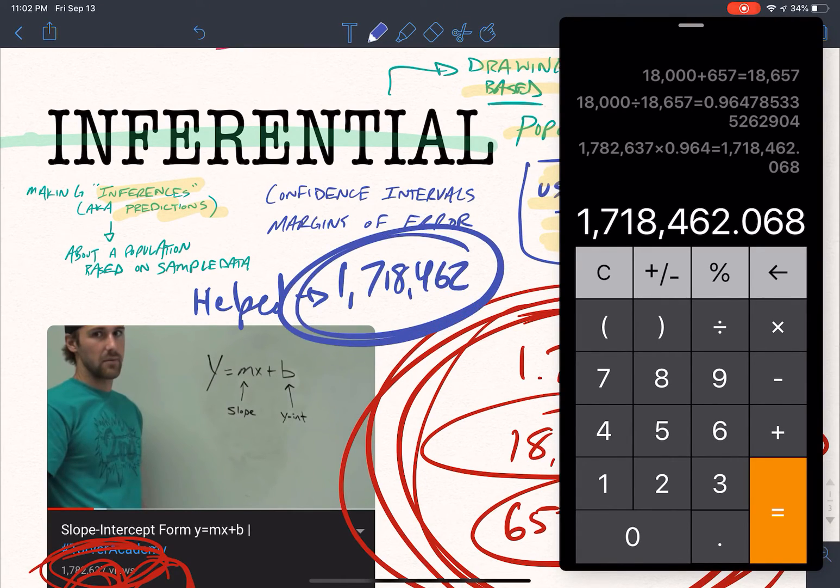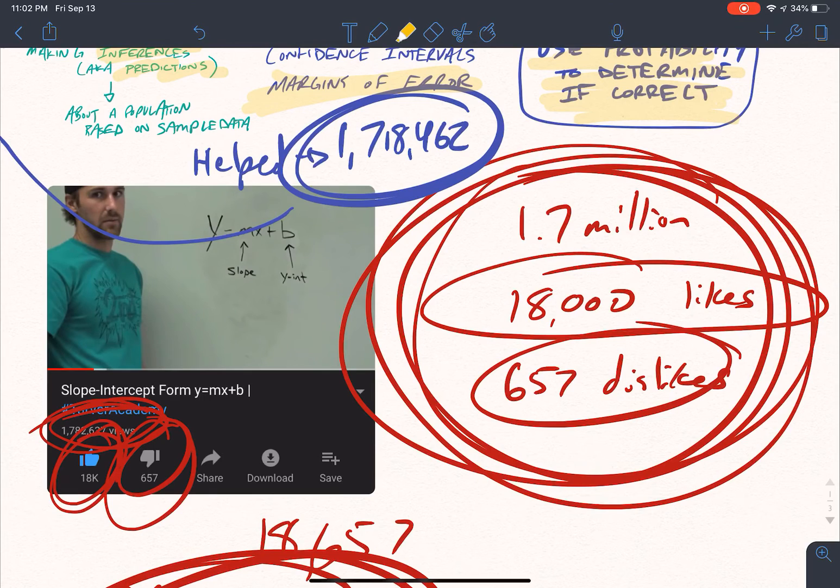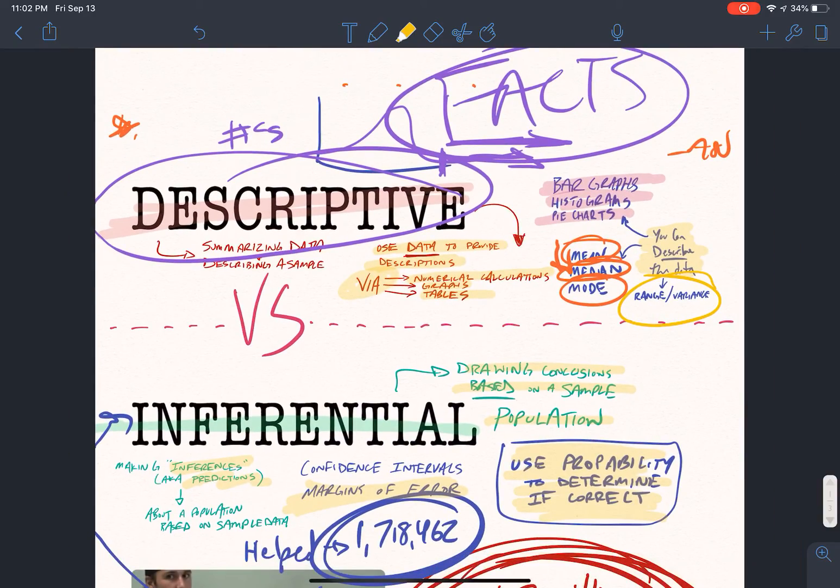Now there is going to be a margin of error. There is a level of, I could be wrong. It could have, could be more views than people that helped. More people could take the time to like it than the people that took the time to dislike it. So you're inferring. So there is a level, a margin for error, exactly what it sounds like.